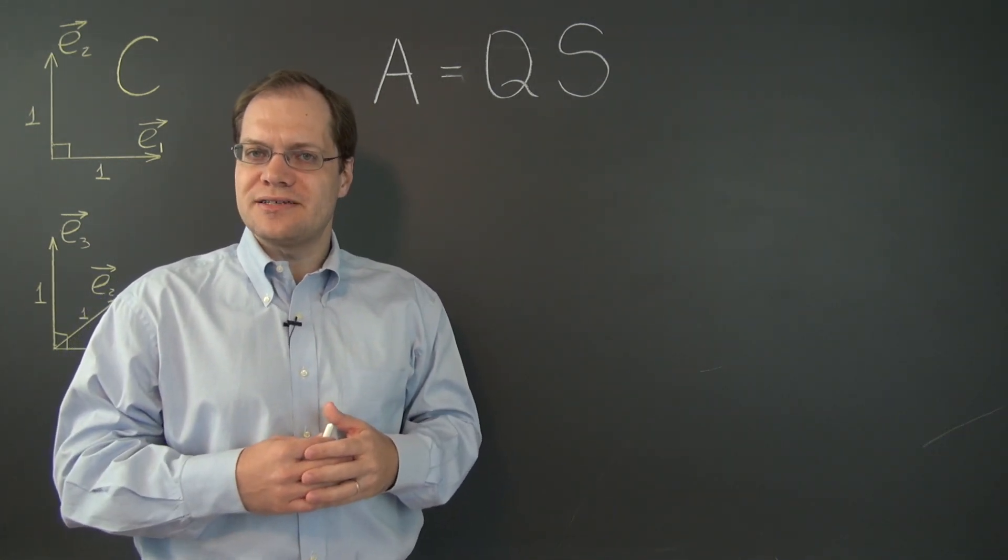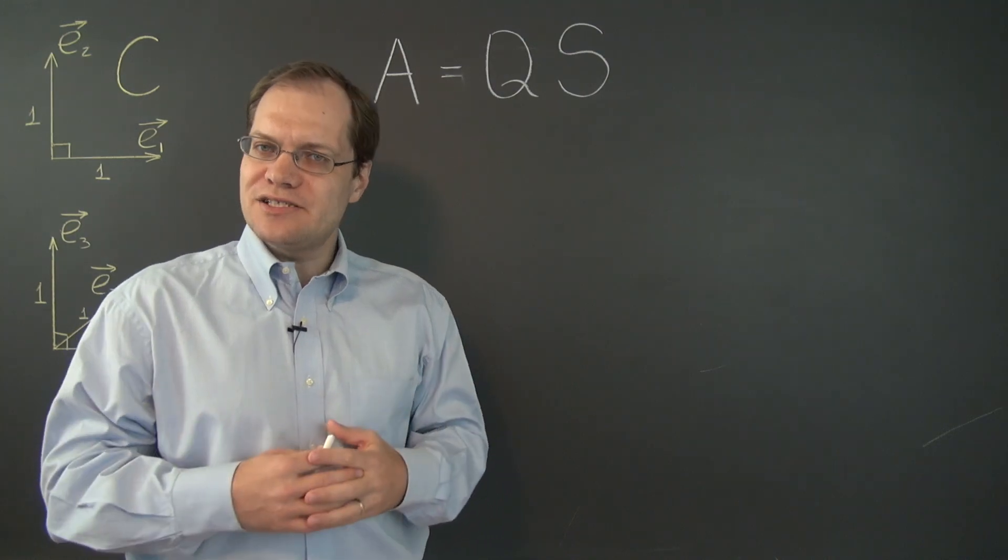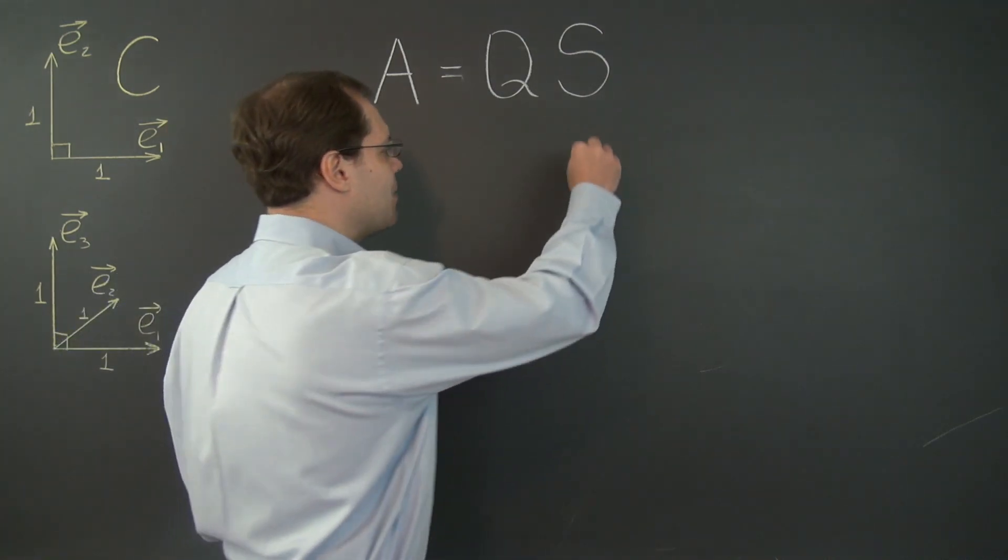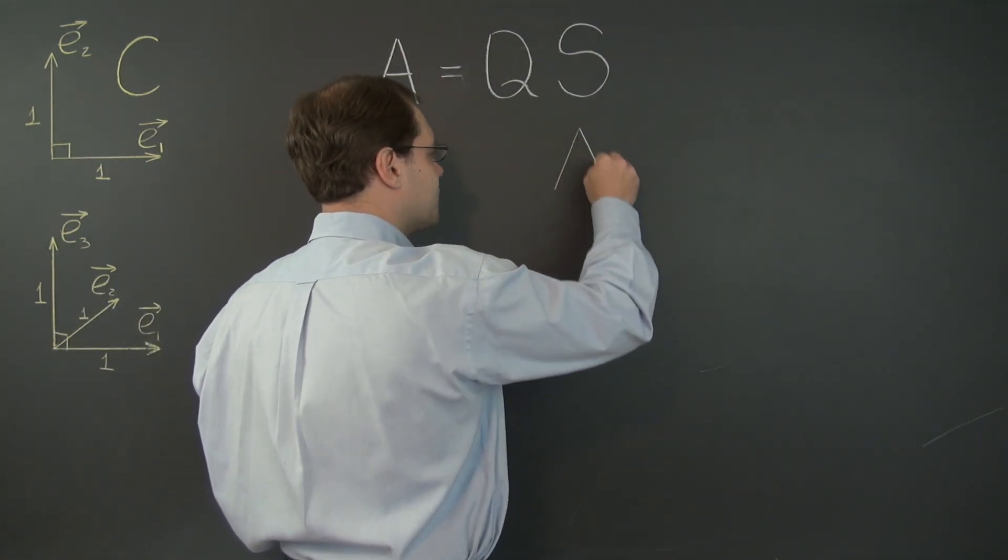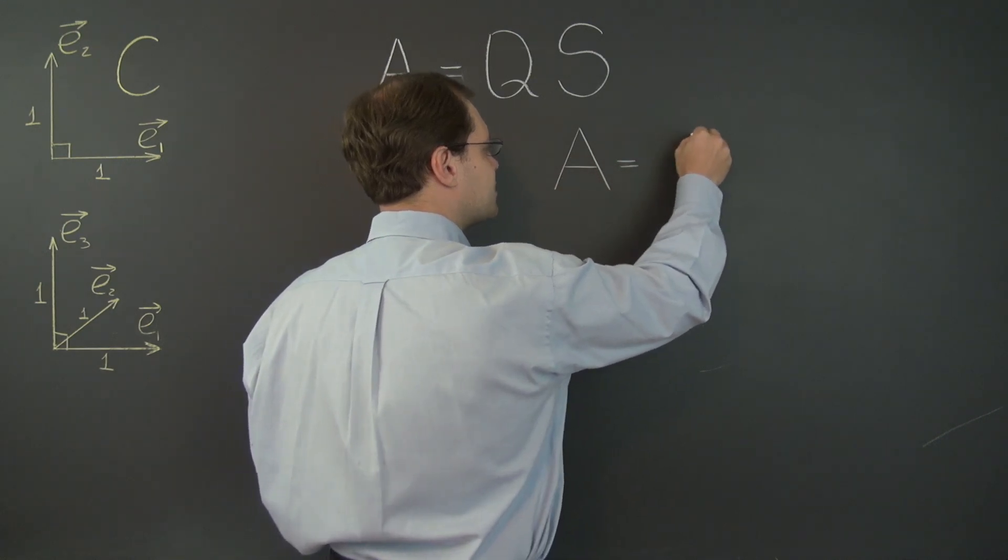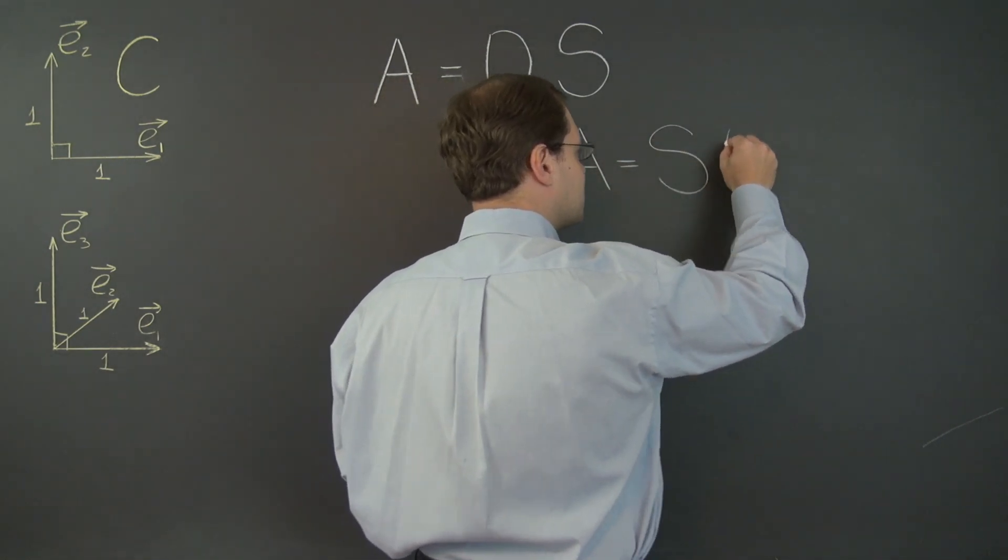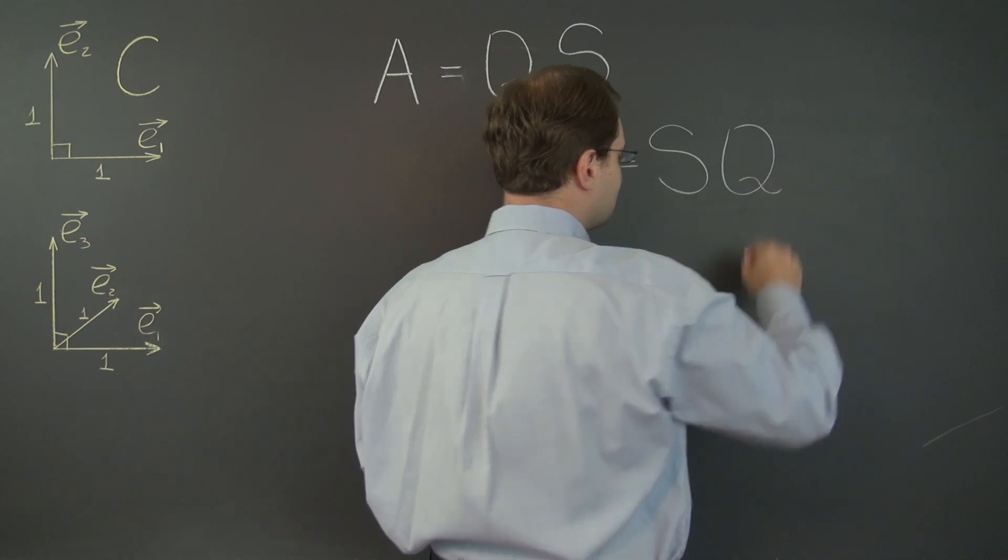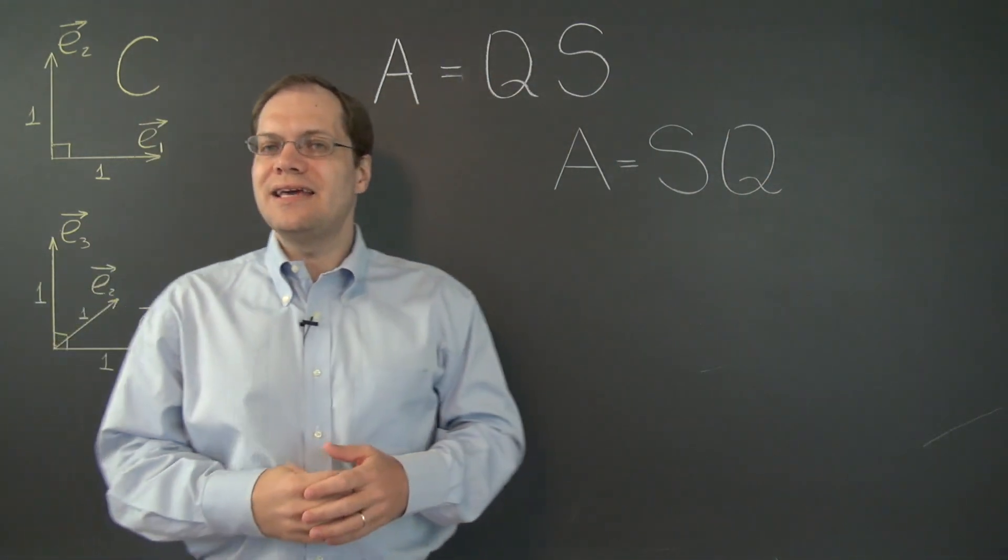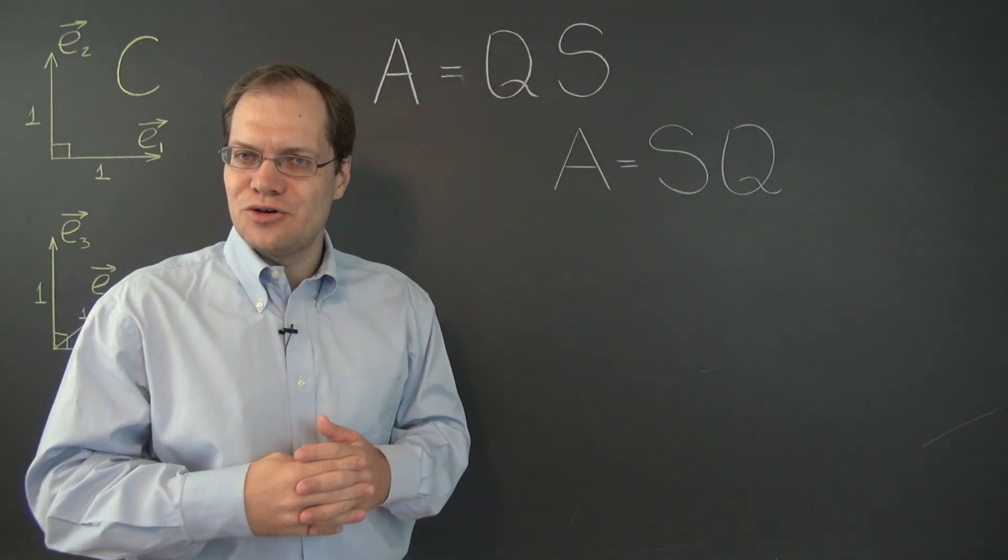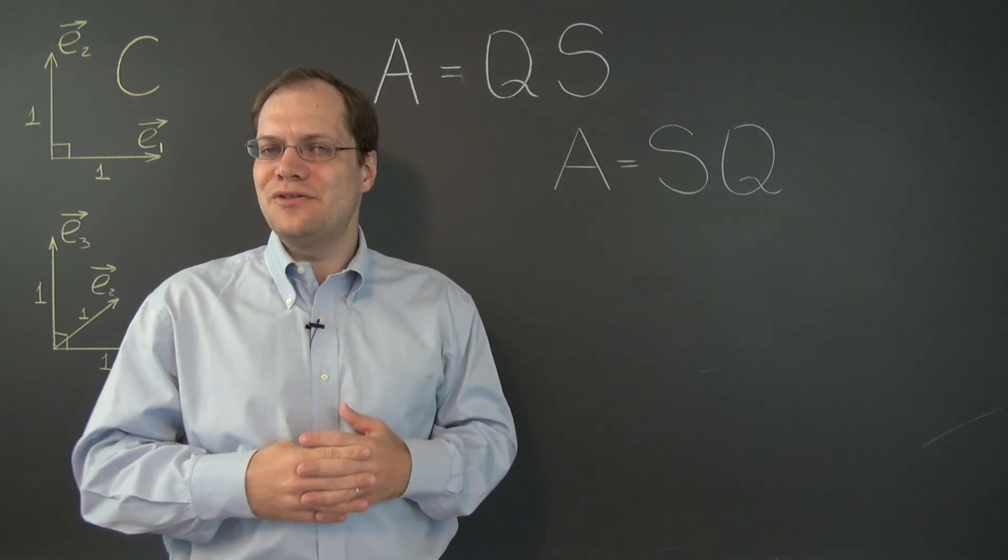Can A also be represented as a product of the same kinds of matrices but in the opposite order? A equals SQ where S is the symmetric matrix and Q is the orthogonal matrix. And the answer is, well, you can think about it on your own. Pause the video and come back when you think you have the answer.